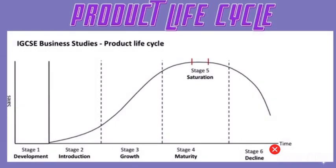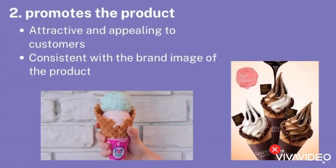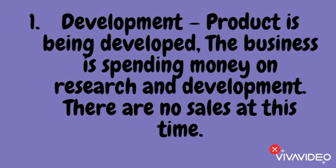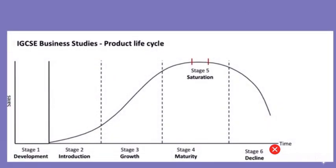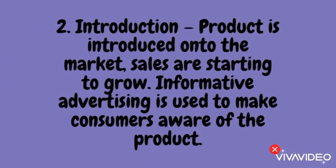Now we're going to look at the product lifecycle. Stage 1 is development — this is when the product is being developed. The business is still spending money on research and development, there are no sales at this point, and the product has not been launched into the market yet. Stage 2 is introduction — when the product is introduced into the market, it is just launched and sales are starting to grow. Informative advertising is being used to make consumers aware of the product.